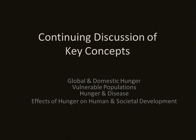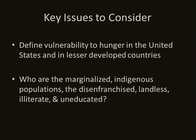But first, I'd like to take a minute and recap a little bit of what Doug talked about. Key issues to consider when we define vulnerability and we look at hunger in the United States versus hunger in lesser developed countries — we're going to look at what are the vulnerable populations within those two contexts. We're also going to look at who are the marginalized people. We see indigenous populations, people who are disenfranchised, the landless, the illiterate, and the uneducated. I want to help you understand who those people are and where they exist.